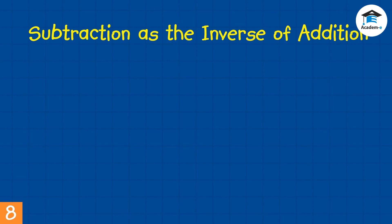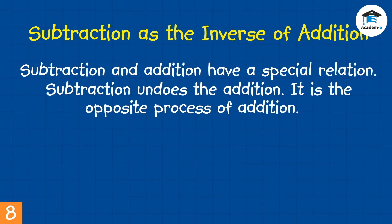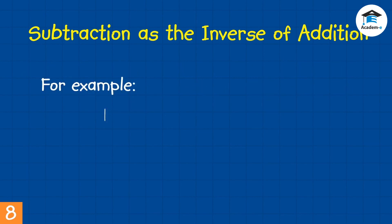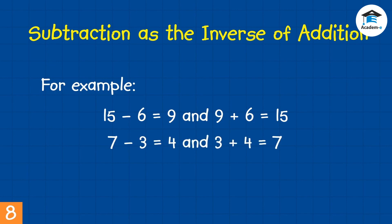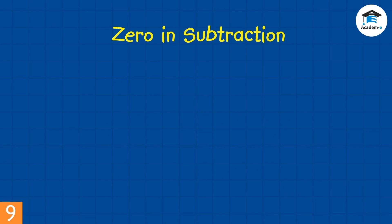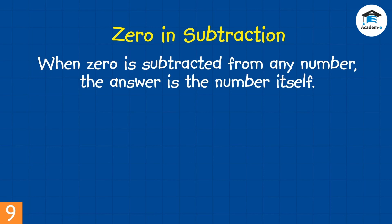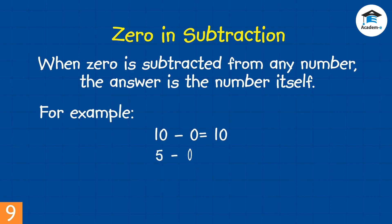Subtraction is the inverse of addition. Subtraction and addition have a special relation — subtraction undoes addition; it is the opposite process of addition. When 0 is subtracted from any number, the answer is the number itself. For example: 10 minus 0 equals 10; 5 minus 0 equals 5; 17 minus 0 equals 17.